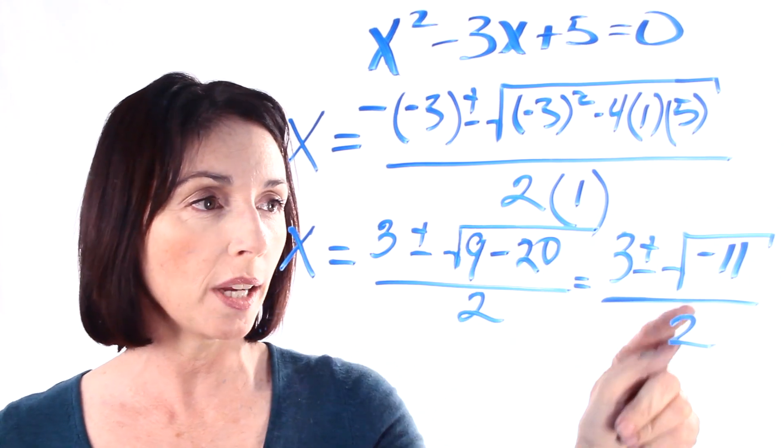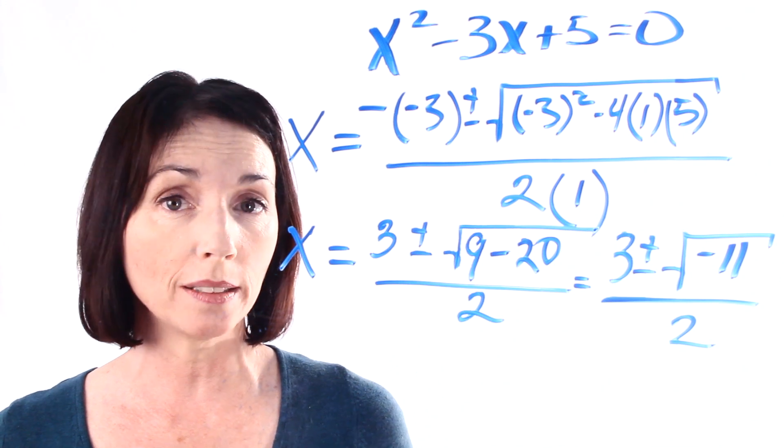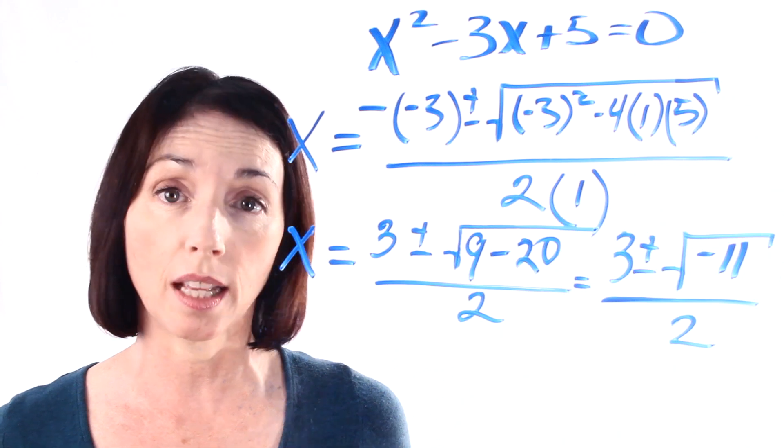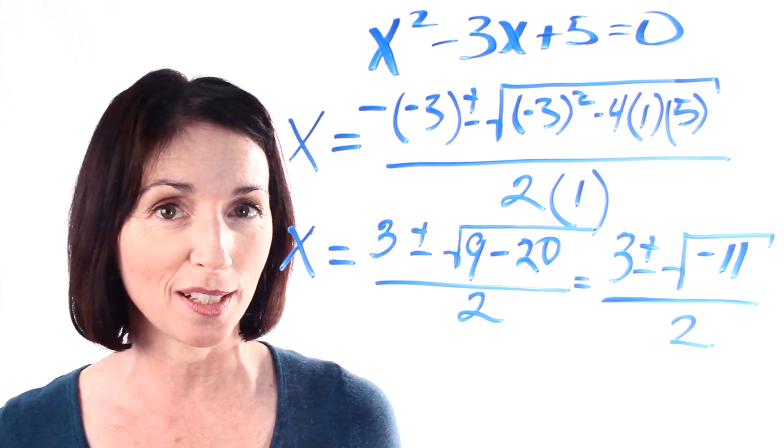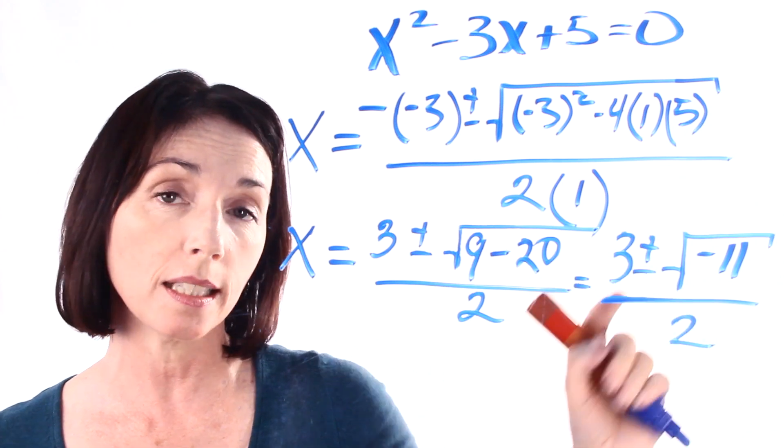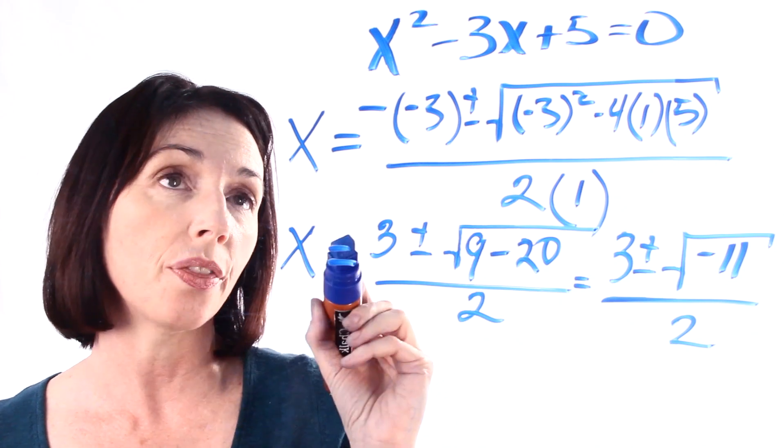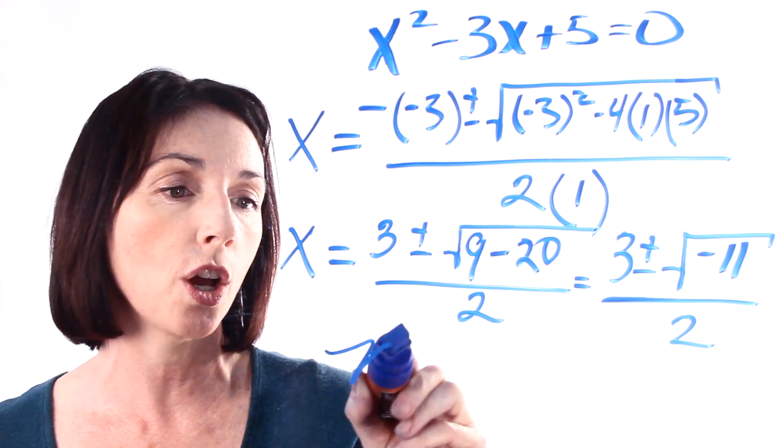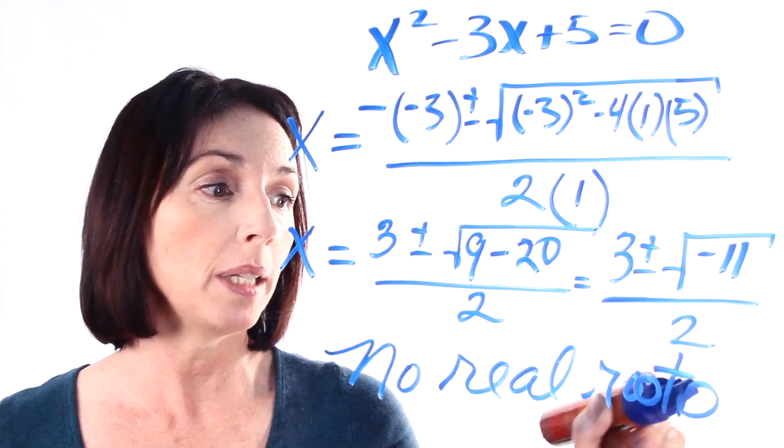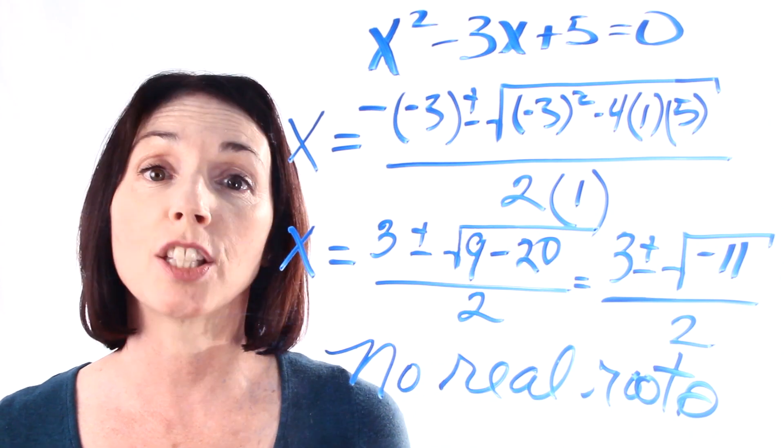Now if you'll notice, we're trying to take the square root of a negative number. And if we're working in the set of real numbers, we can't do that. You can do that in a larger set of numbers called the set of complex numbers, but that's a different topic. So in this case, if we're working in the set of real numbers, since we can't take the square root of a negative number, that means that our answer is that this quadratic equation has no real roots. And what that means is that in the set of real numbers, this quadratic equation has no solutions.